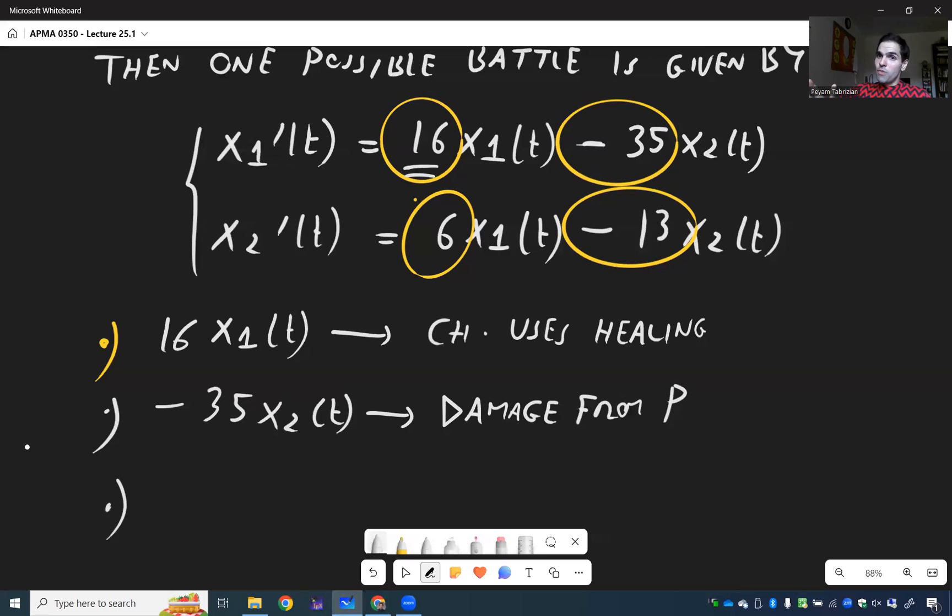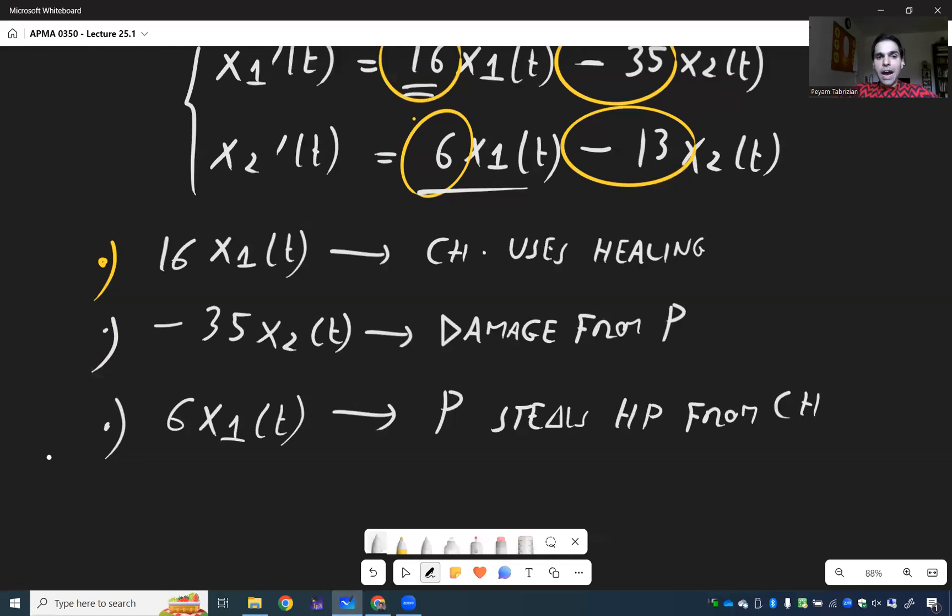And then so that was on the Charmander, now let's look at the Pikachu side. So Pikachu somehow gets positively influenced by Charmander so the strongest Charmander is somehow Pikachu gets more hit points and that's stealing hit points. So 6 X1 of T means Pikachu steals hit points from Charmander. And then finally what is this minus 13 X2 of T? So it depends on Pikachu and somehow negatively affects Pikachu and that is when Pikachu loses its own hit points for instance by electrocuting itself. So Pikachu electrocutes itself.